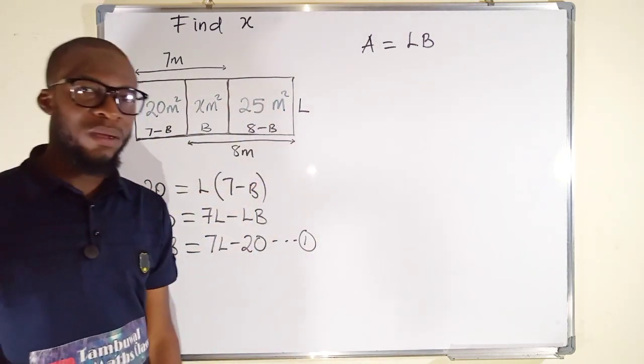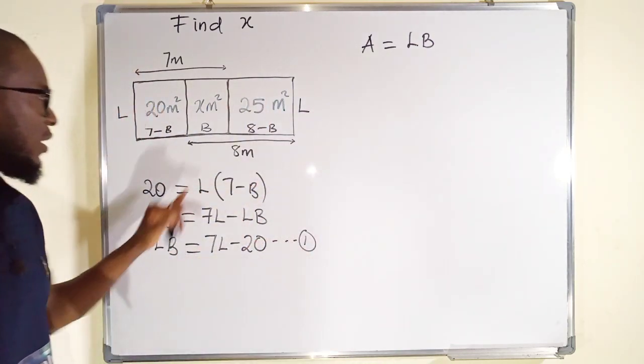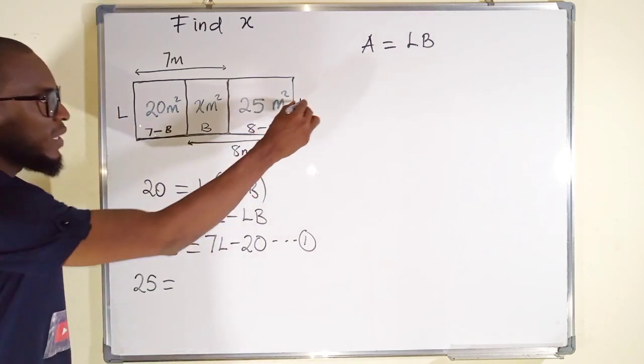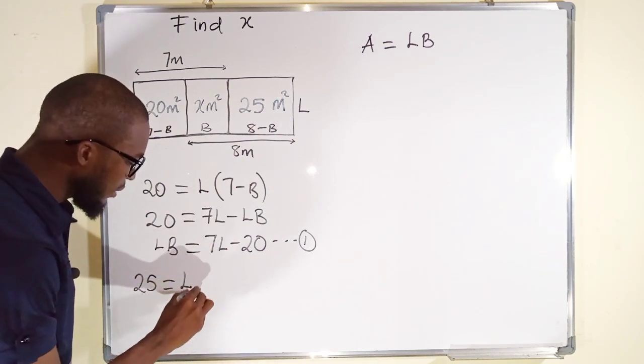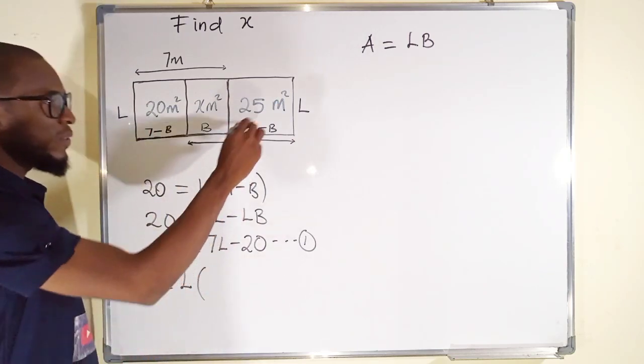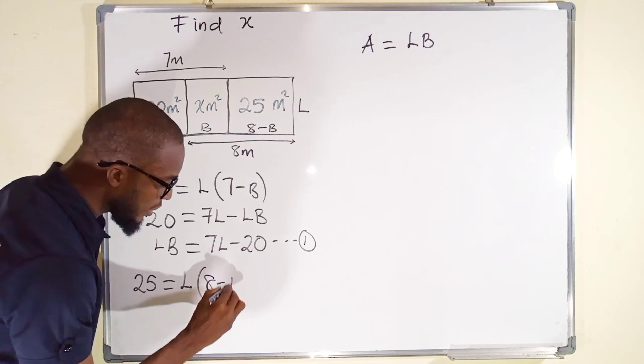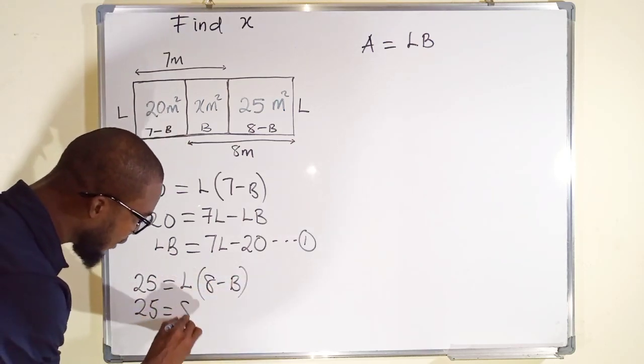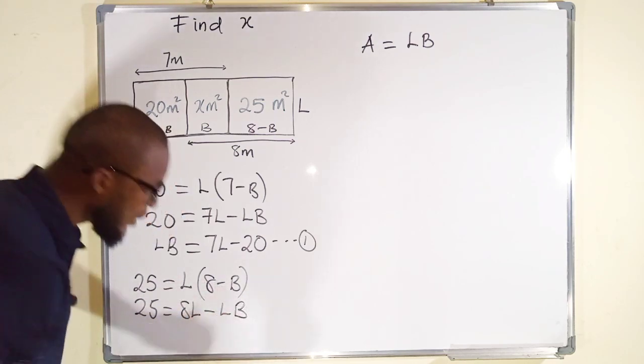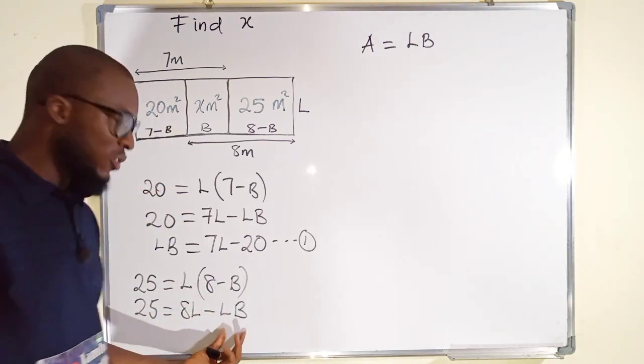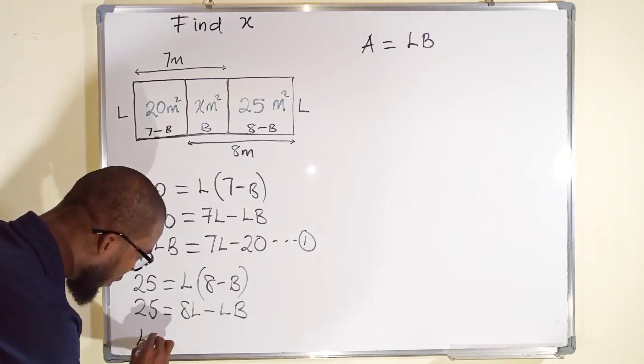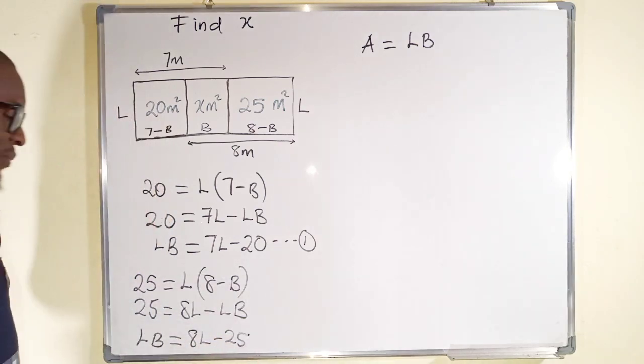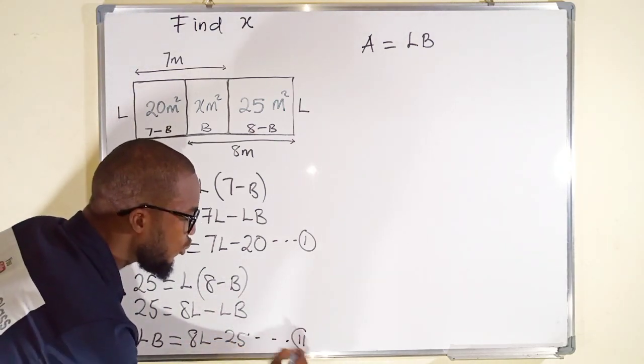Now, let me use the last square or rectangle to find another formula. 25 is equal to the length because they have the same length. LL. Multiply by the breadth which we have as 8 minus B. Expanding this, we have 25 equal to 8L minus LB. I can do the same and make LB the subject. LB will now be equal to 8L minus 25. I can name this as equation 2.